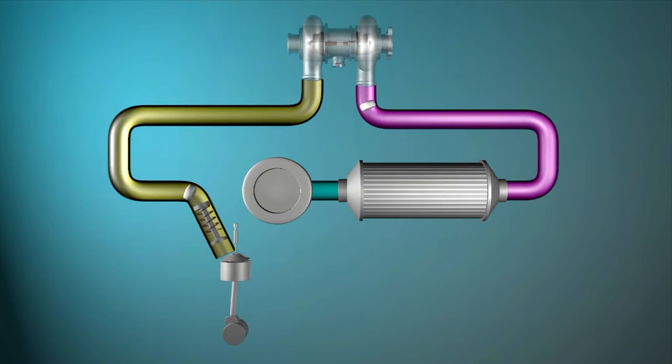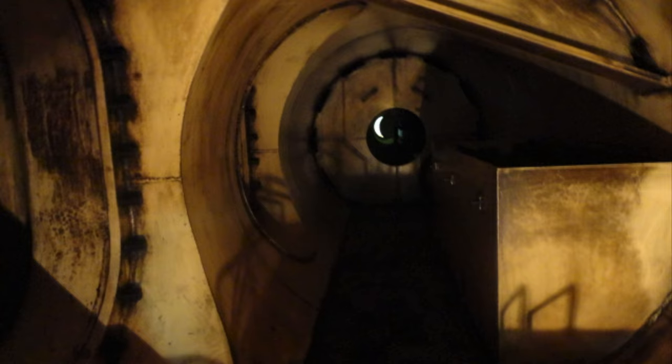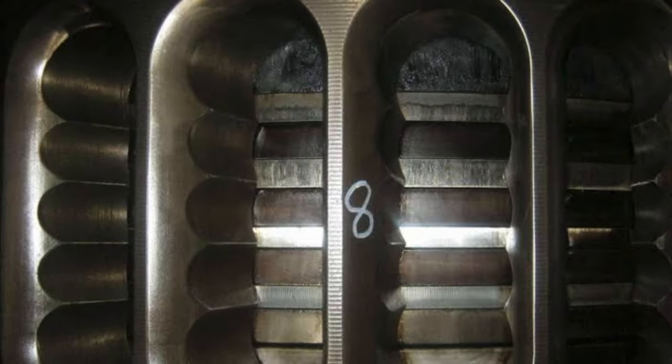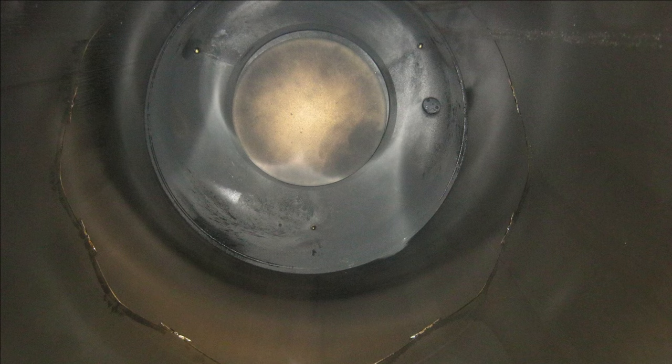This cooled air is then supplied as fresh air inside the scavenged trunk of the engine from where it takes the supply of combustion air through scavenged ports of the liner.